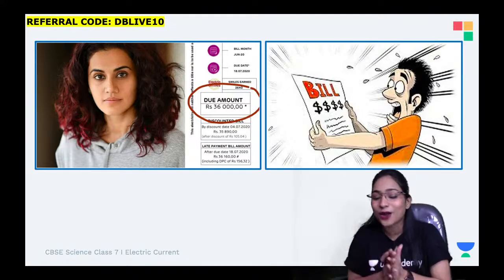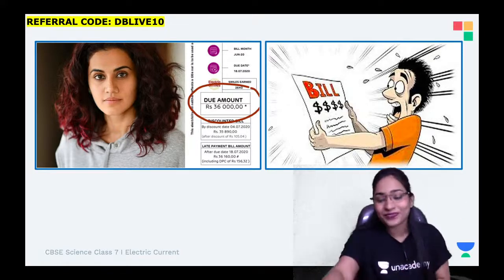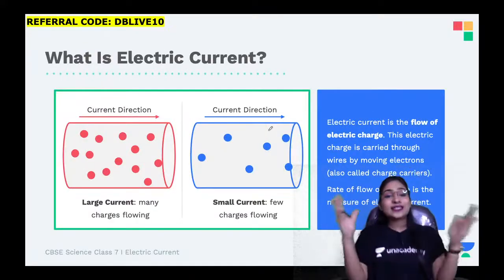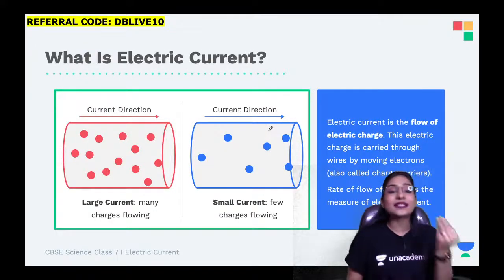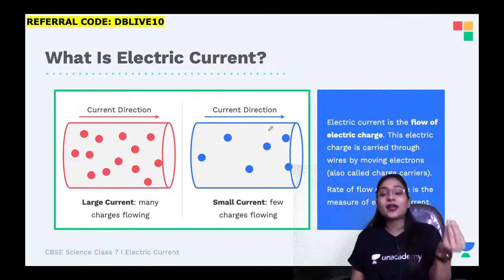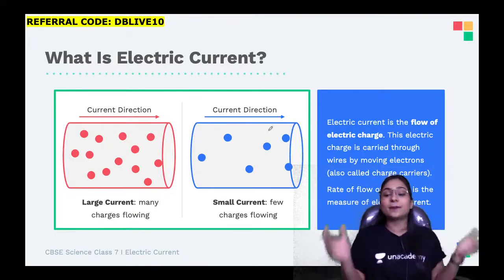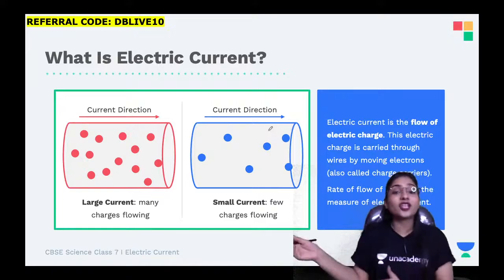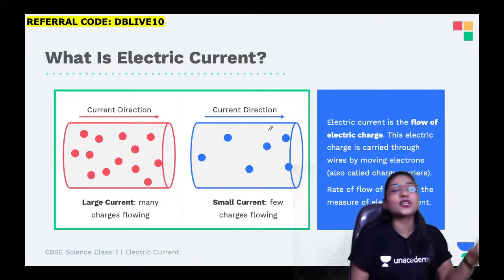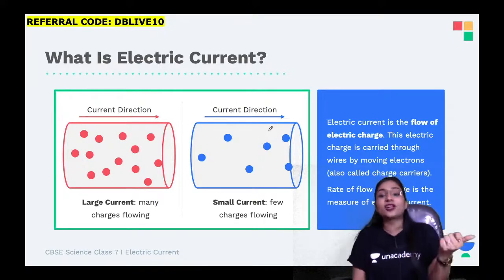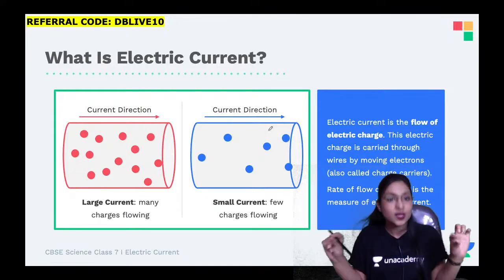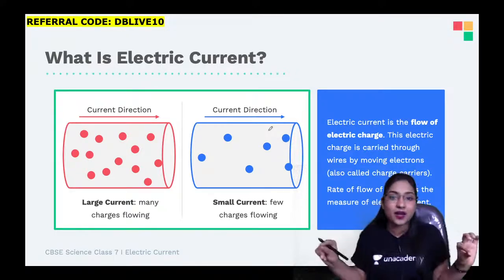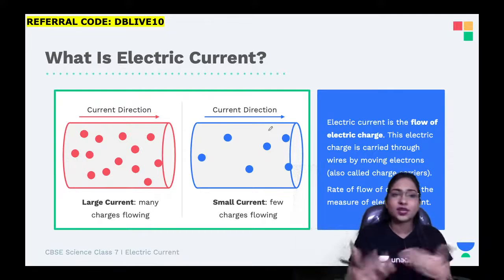Now we will talk about electricity today. What is electric current? Electric current is nothing but the flow of electric charge. This electric charge is carried through wires - generally we use copper wires and aluminium wires. We will study about conductors of electricity in further sessions.